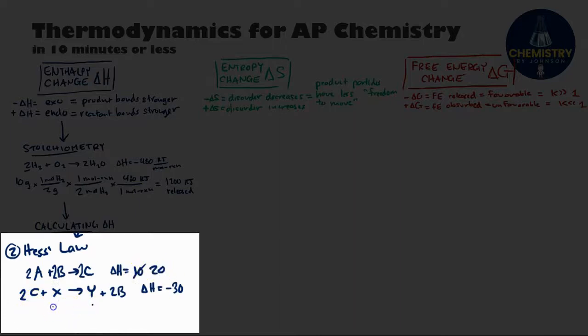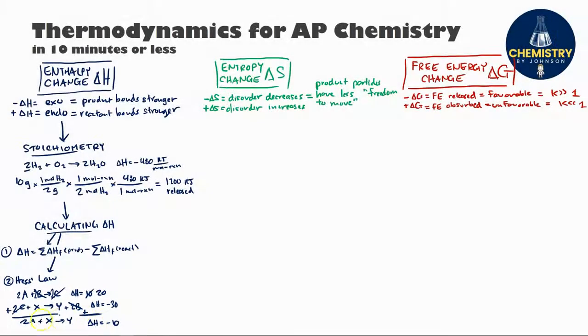Now, I can add up these reactions, and some of these particles will cancel off, like the two Cs on opposite sides and the two Bs on opposite sides, making the net reaction 2A plus X produces Y. I could then calculate the enthalpy value for that net reaction by simply adding up my altered enthalpy values here, 20 plus negative 30, giving me a final answer of negative 10 for the enthalpy change for the net reaction.